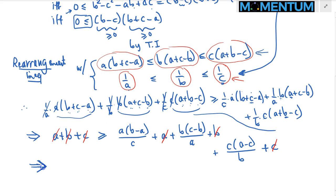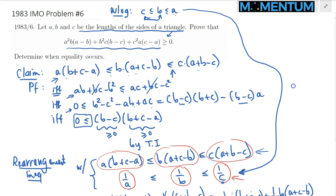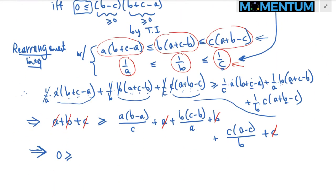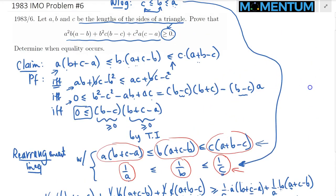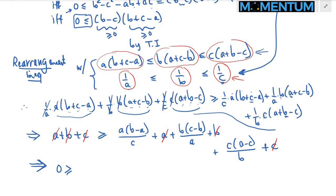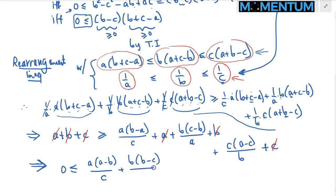Our direction is totally wrong — we wanted to show the other direction. So we move the remaining expressions to the other side, multiplying by −1: 0 ≤ A(A−B)/C + B(B−C)/A + C(C−A)/B.